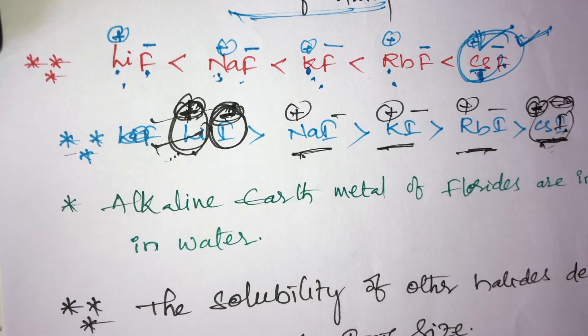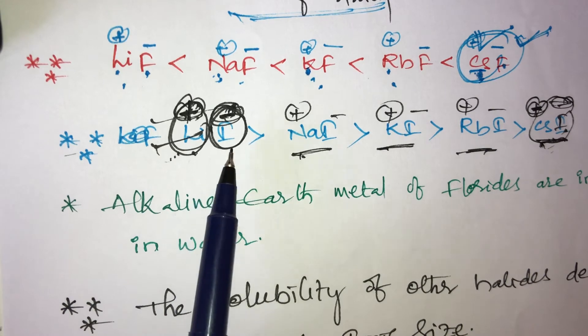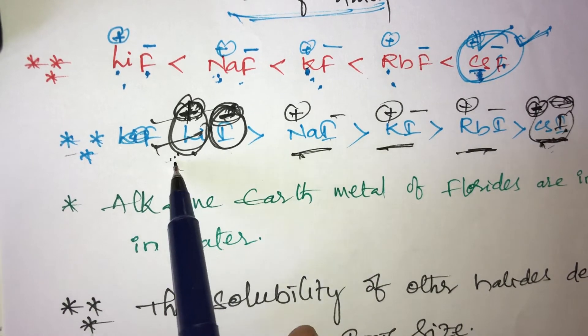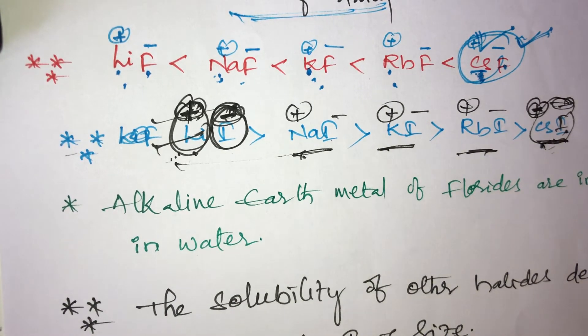This is the simple concept. Lithium iodide is greater than sodium iodide — this is the solubility order.